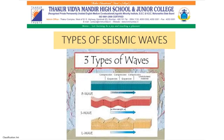The third type are L waves, also called surface waves. After the primary and secondary waves affect the surface, a new set of waves is generated on the surface itself. These waves spread along the circumference of the earth. Due to these waves, the grains in the rock move up and down as well as sideways. That is why these waves are the most destructive.